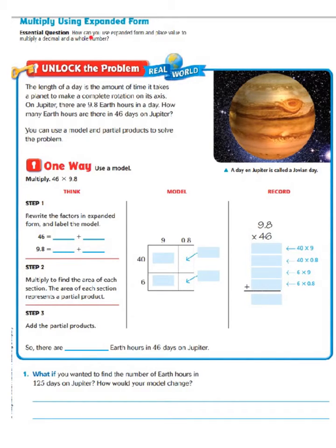We are going to be learning how to multiply using the expanded form. Our essential question is: how can you use expanded form and place value to multiply a decimal and a whole number?